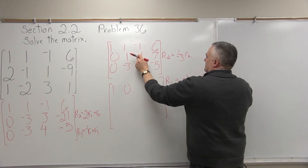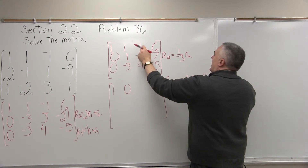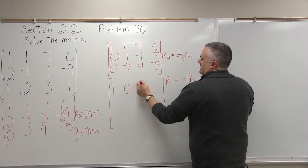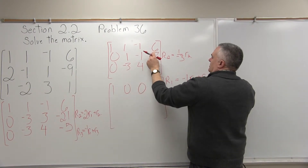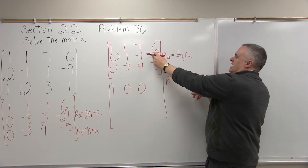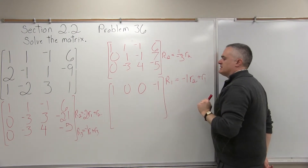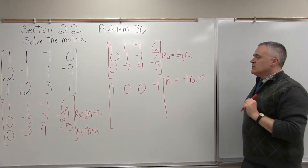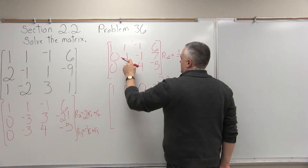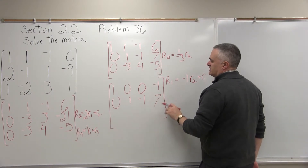Next position: negative 1 times negative 1 — negatives cancel — gives positive 1; positive 1 plus negative 1 is 0. Last column: negative 1 times 7 is negative 7; negative 7 plus positive 6 is negative 1. So there's one of my 0s. The middle row stays as 0, 1, negative 1, 7.